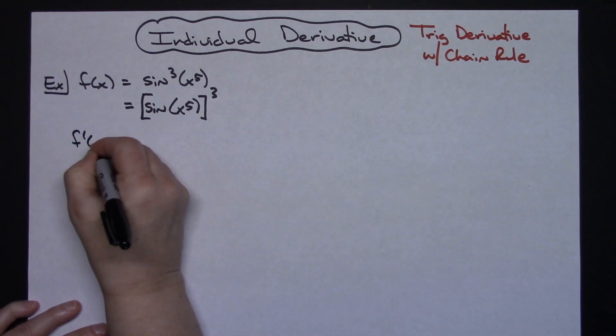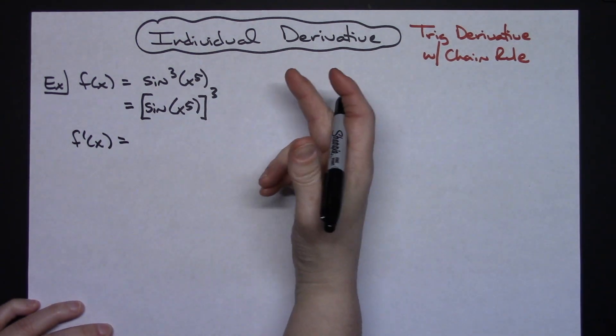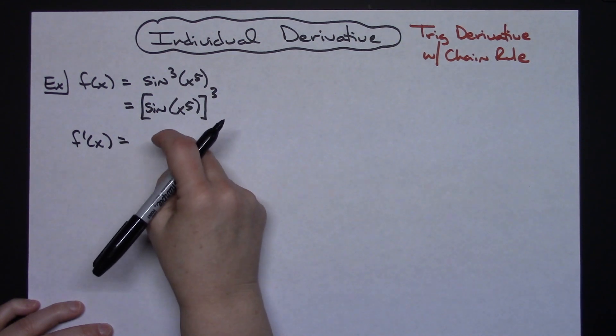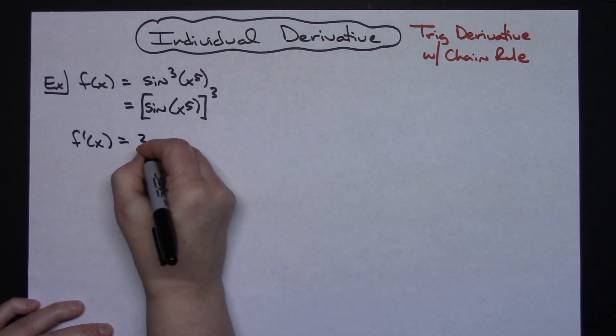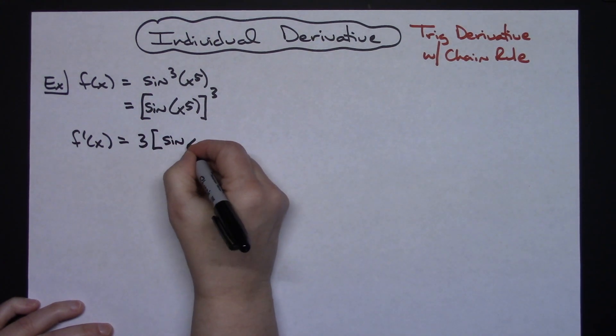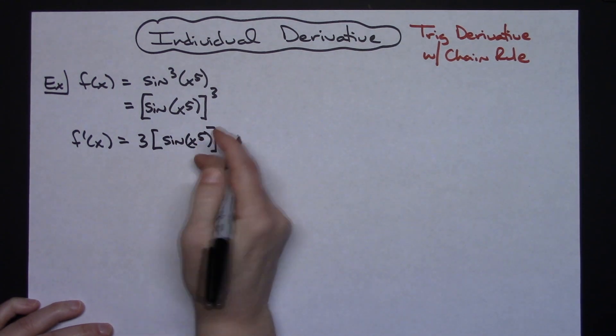Now to start my derivative f prime of x. I want to take the derivative of the outside function which is something raised to the third power leaving that inside function alone. So to do that I'm going to pull the three down in front. So I'm going to have three times the sine x to the fifth. That inside part of the function stays the same.